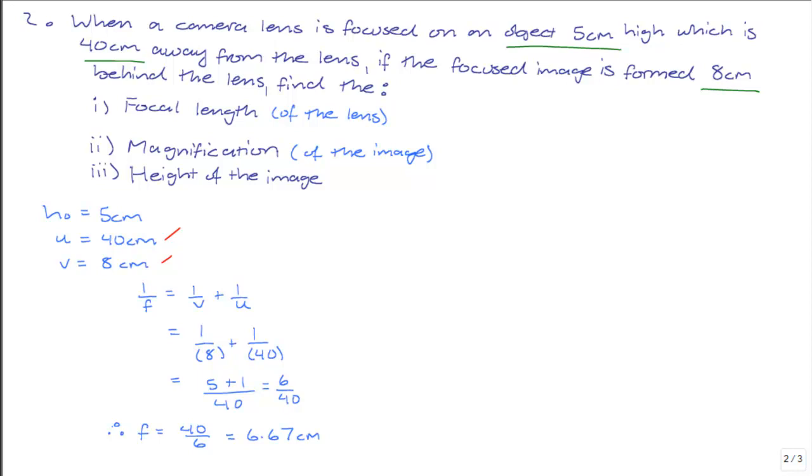The next thing we are asked to find is the magnification of the image. Now the magnification, M, of an image is equal to the image height divided by the object height, or conversely, the image distance divided by the object distance.